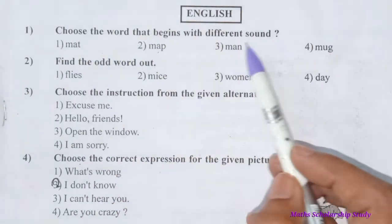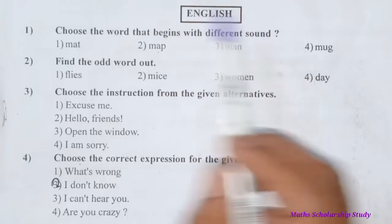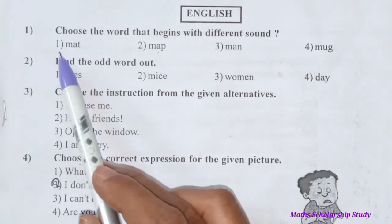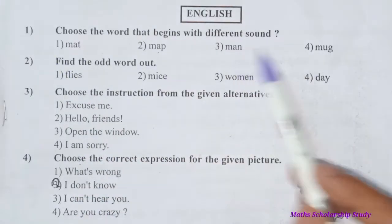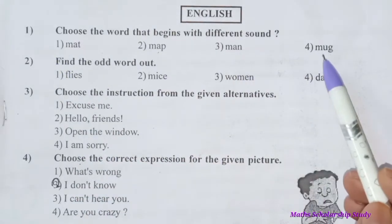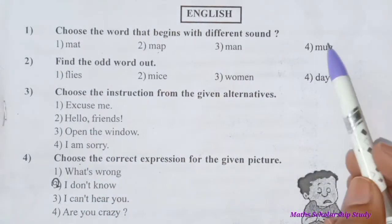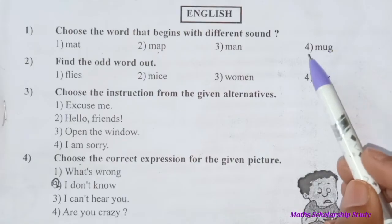Question number one: Choose the word that begins with a different sound. Options are: mat, map, man, mug. The correct option is mug.